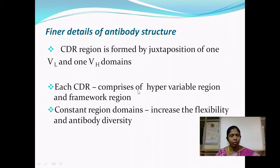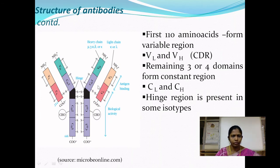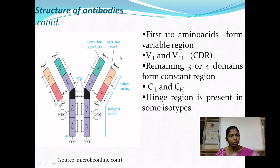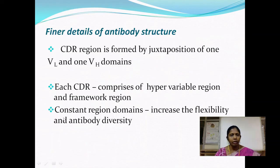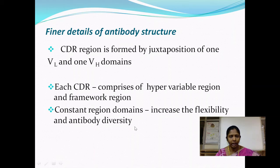The variable region is important in antigen recognition and interaction, whereas the constant region serves many other important functions. The constant region domains increase the flexibility of the antibody molecule by acting as a hinge region, allowing bending or movement so antibodies can comfortably bind to antigen molecules on the surface of pathogens. Differences in the amino acid sequences of the constant region give rise to different antibody isotypes and contribute to antibody diversity. Different isotypes possess different specific functions.